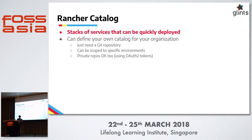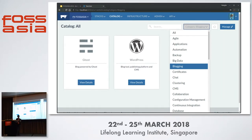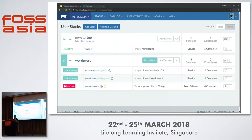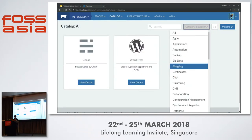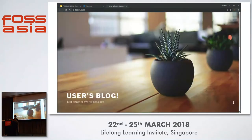One interesting feature of Rancher is the Rancher Catalog, which brings together stacks of services that can be quickly deployed as a unit. Rancher comes with a default set of catalogs that includes things like WordPress, GitLab, Ghost, and more. You can just click one button, view details, and install. Rancher will provision the entire stack for you — that's pretty much the fastest way to get WordPress running.